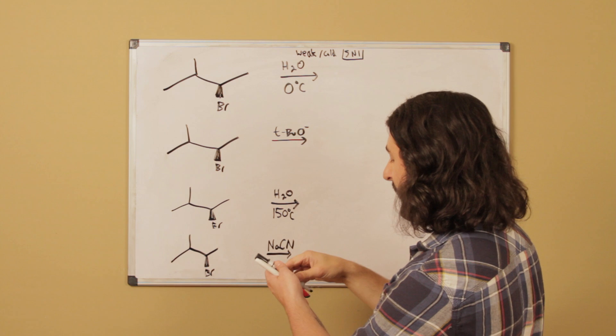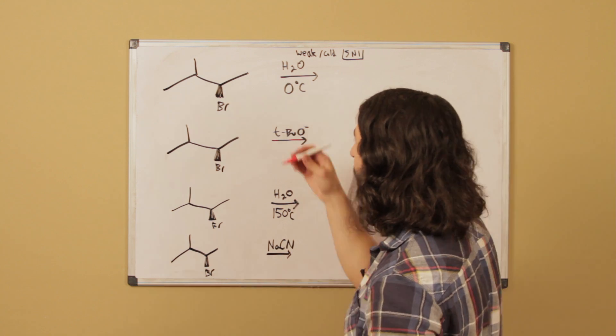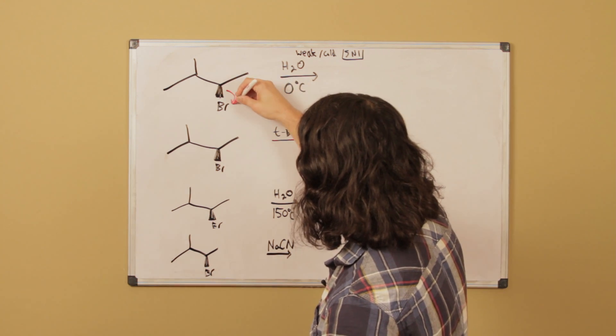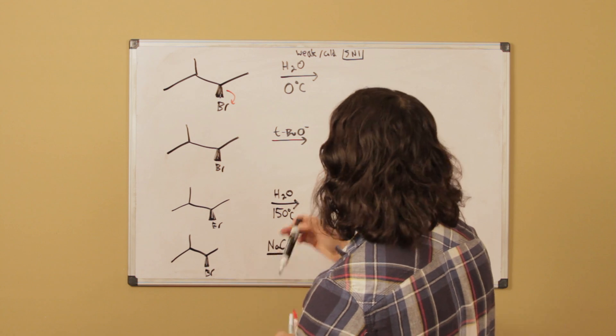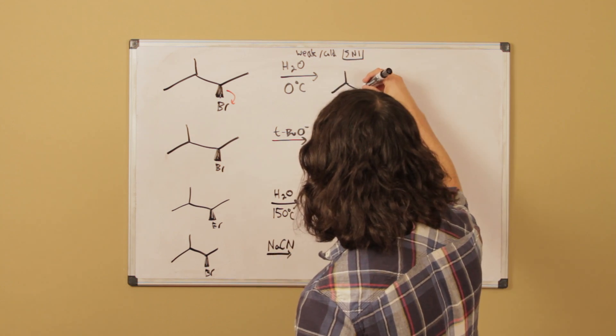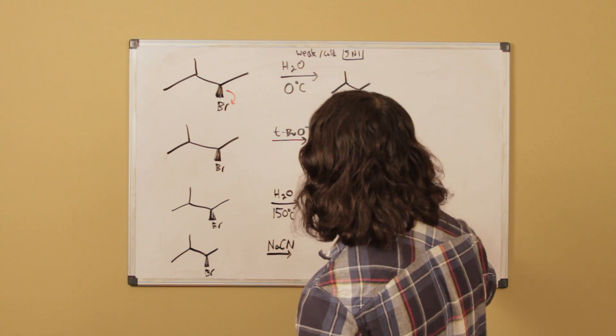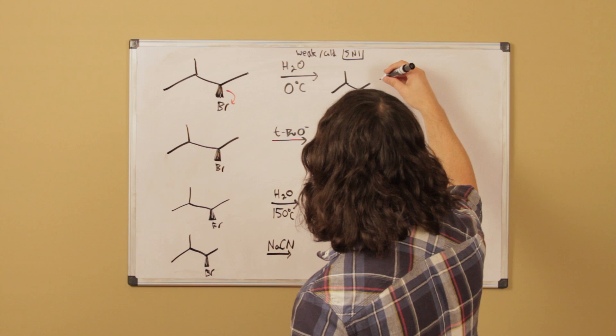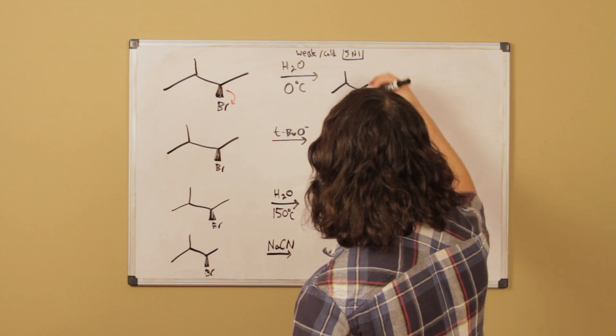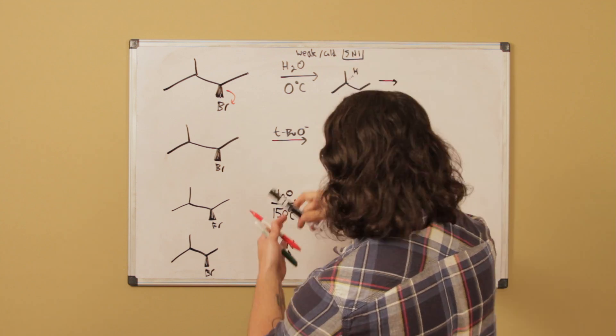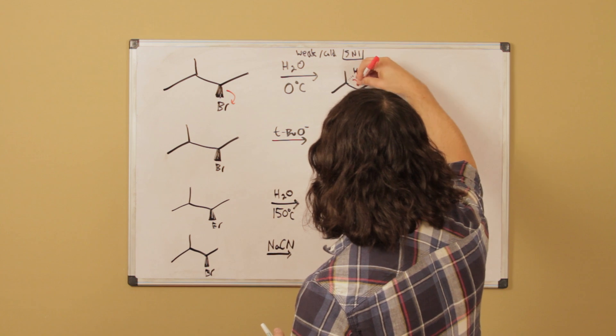And so SN1 we know that the first step is going to be that the leaving group leaves. And so we get the carbocation there and then what's going to happen is that we are probably going to get this hydride shift, right? And so we'll get this guy here, and there's our carbocation.